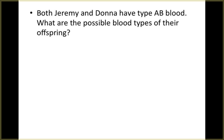We're going to go right into this first problem. Both Jeremy and Donna have type AB blood. What are the possible blood types of their offspring? So we need to first determine the genotype of the parents and then perform our Punnett square just like we normally would.